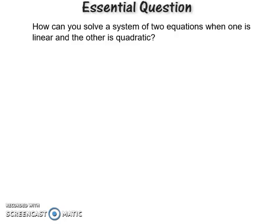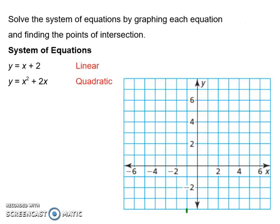So let's get to it. Our central question is: how can we solve a system of two equations when one is linear and one is quadratic? In this first example, we're going to be solving this system of equations — a linear and a quadratic — by graphing. We're just going to graph these two equations and see if we have a point of intersection, or maybe even two. Let's first graph that linear equation.